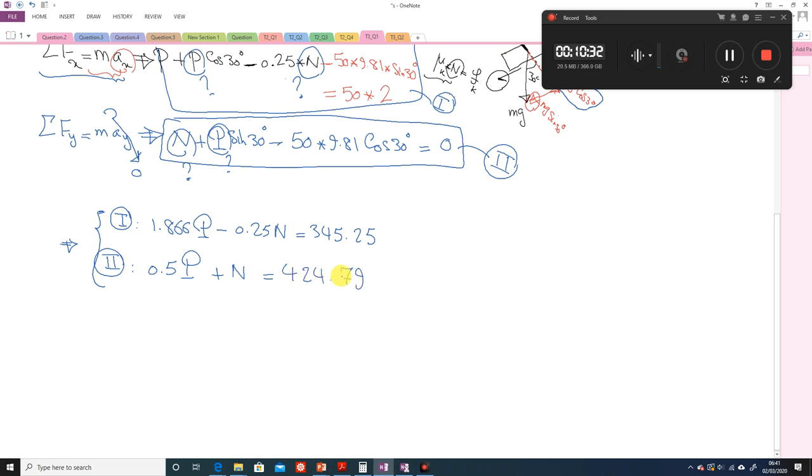Two equations, two unknowns, gives you N is equal to 381 Newton and P is equal to 227. Don't forget the units.